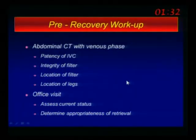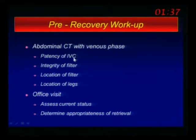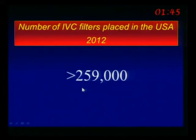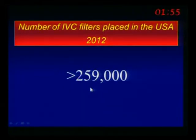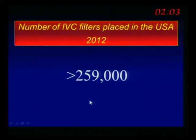They recommend that prior to retrieving, get an abdominal CT scan and look at the venous phase — look for patency, integrity of the filter, count the limbs, location of the filter, and location of the legs. Document all of that. There are close to 260,000 filters placed in the United States last year, a number that more than doubled in the last five years. The FDA, Medicare, and CMS have put a brake on that by decreasing the reimbursement rate — nearly cutting it in half — while increasing the reimbursement for retrieval of the IVC filter.